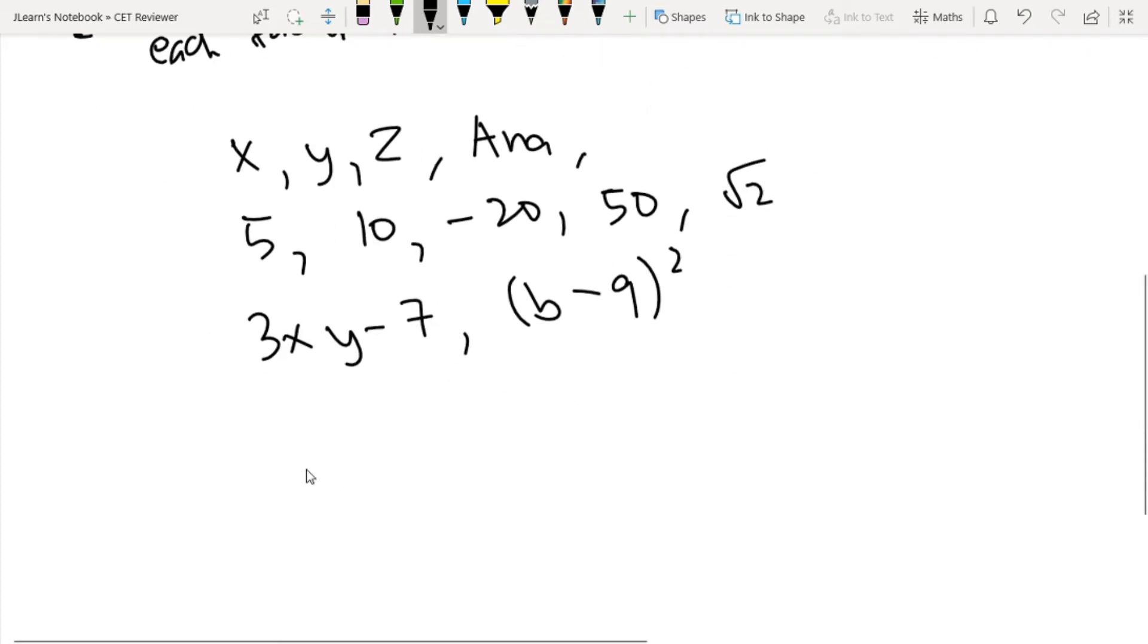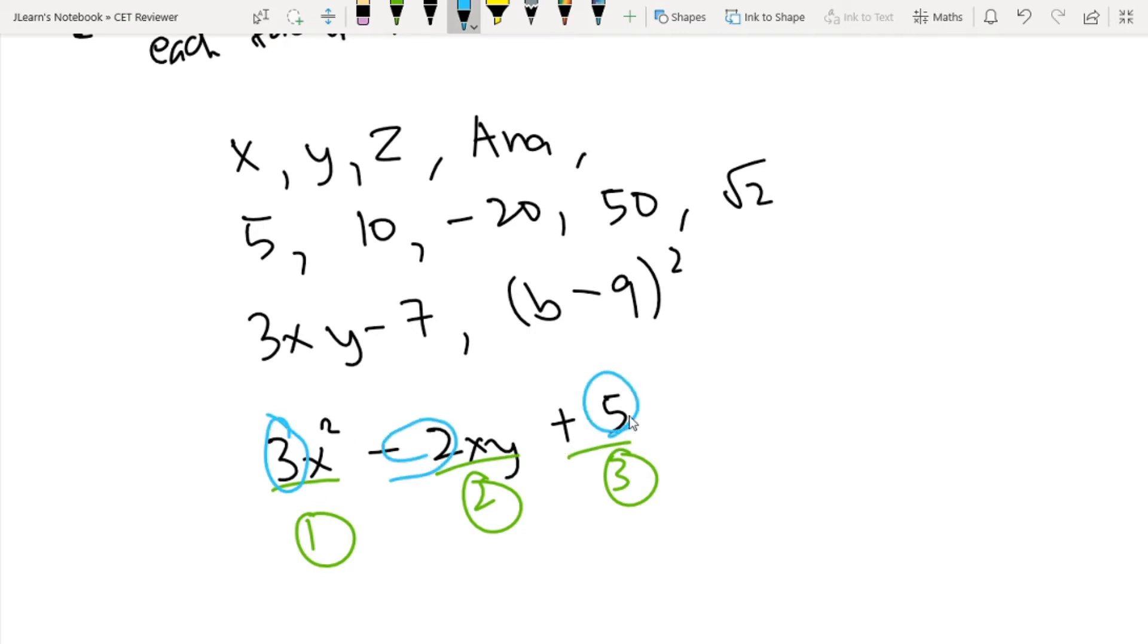So we say na ang algebraic expression 3x² minus 2xy plus 5 has 3 terms. And then yung coefficients ay itong mga numbers, so 3, minus 2, and 5.